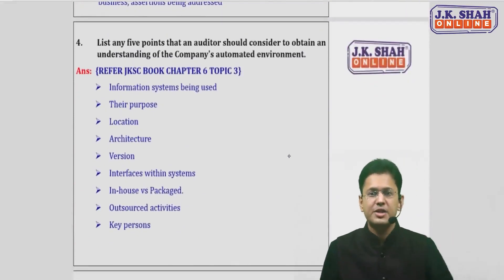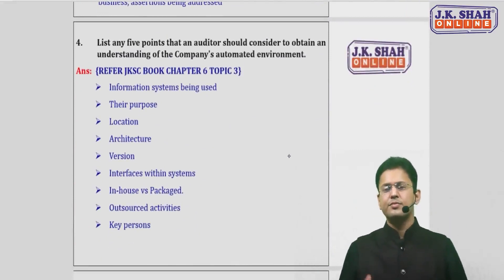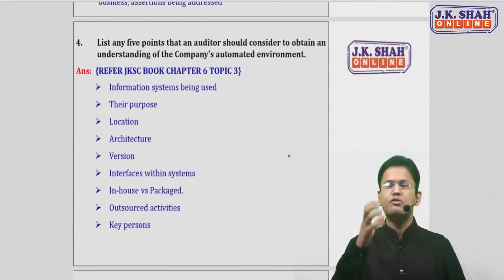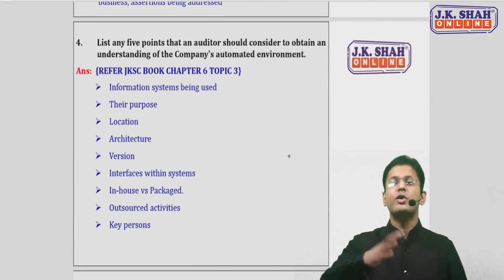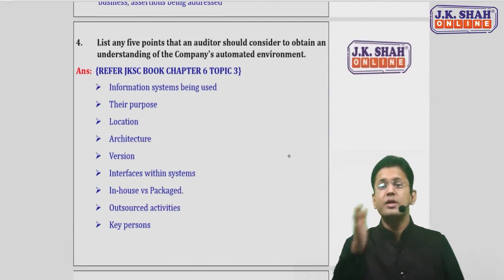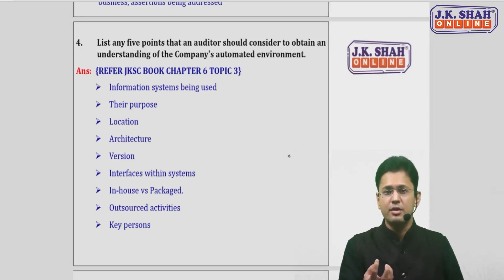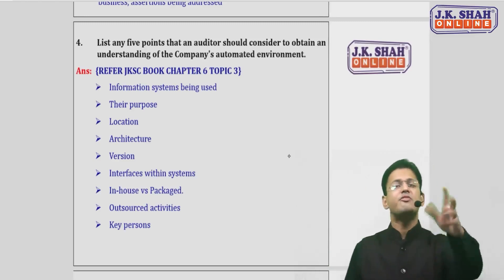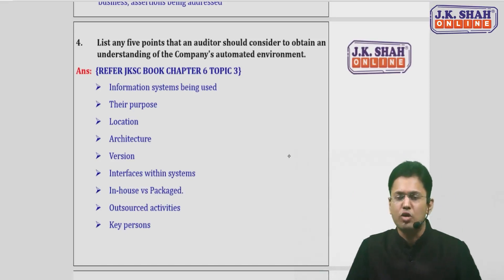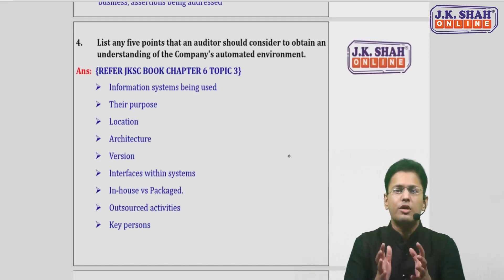SA 315 says you have to understand the entity and the environment before you identify and assess the risk of material misstatement. Since we are auditing in an automated environment, the understanding would be of the entity and its automated environment. The question is: list any five points you will consider to obtain an understanding of the company's automated environment. We will cover more than five here.